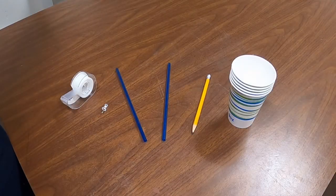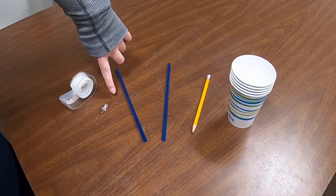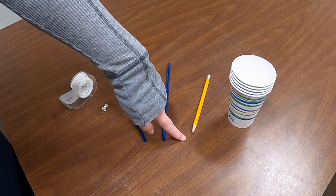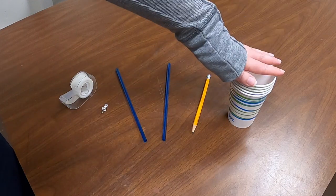To make your anemometer at home you're going to need tape, a thumbtack or pushpin, two straws, one pencil with a sharpened tip and an eraser, and five paper cups.